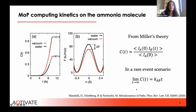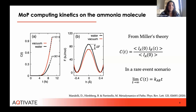We have shown how metadynamics in trajectory space combined with machine learning can help in designing effective collective variables for metadynamics simulations to speed up free energy calculation convergence, applying this protocol to the alanine peptide. We have also shown how metadynamics of path can be used to compute kinetics using Miller's theory, applying the algorithm to the ammonia molecule. These first applications were conducted with a preliminary implementation in the LAMMPS suite. LAMMPS is not well suited for biomolecular simulations, so we decided to implement the path MD algorithm in GROMACS, one of the most widely used HPC-oriented classical MD software packages.